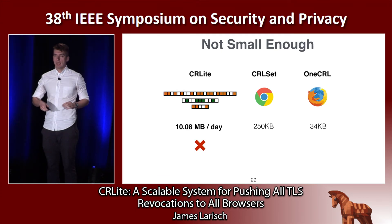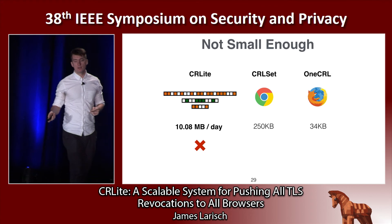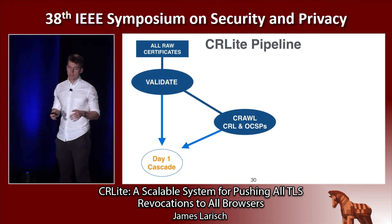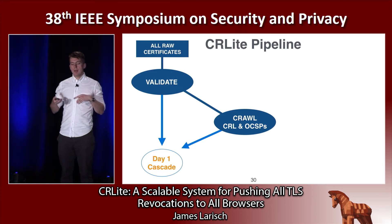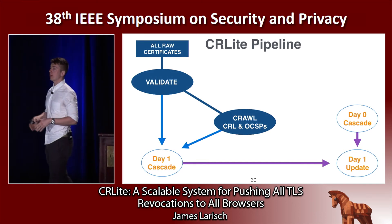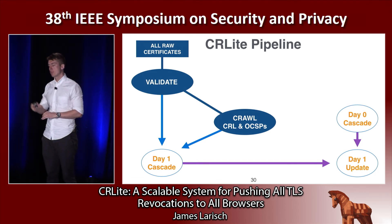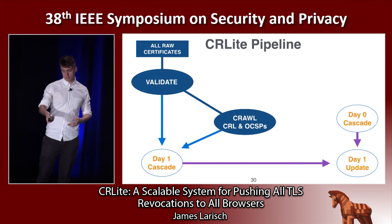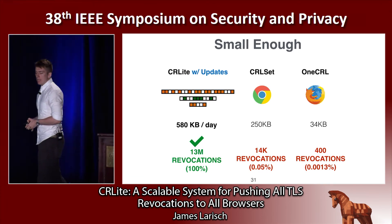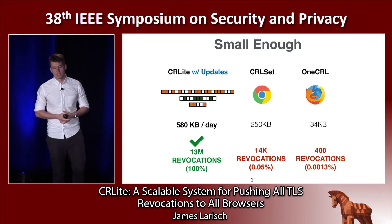Unfortunately, downloading 10 megabytes a day is almost as problematic as downloading full CRLs for every TLS handshake, especially when CRL set is only 250 kilobytes and one CRL is only 34 kilobytes. Luckily, we don't have to ship the full filter cascade every single day. We can ship a daily update, constructed by taking yesterday's filter cascade and today's and bitwise XOR-ing each level. These diffs are shipped to clients, who XOR them onto yesterday's filter to produce today's filter. After compression, these diffs are on average 580 kilobytes per day.